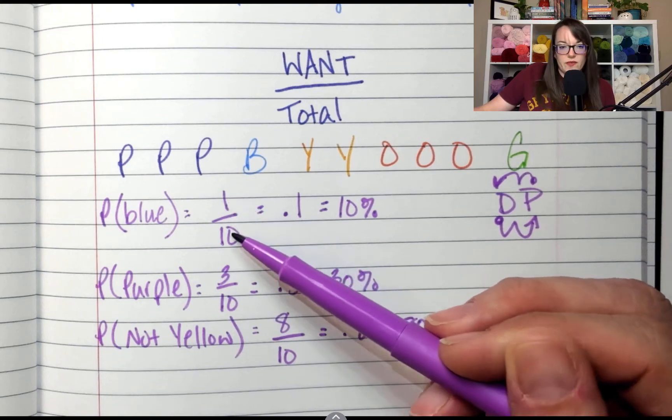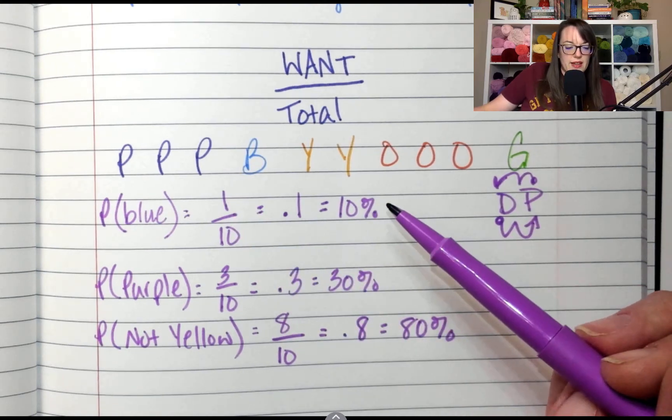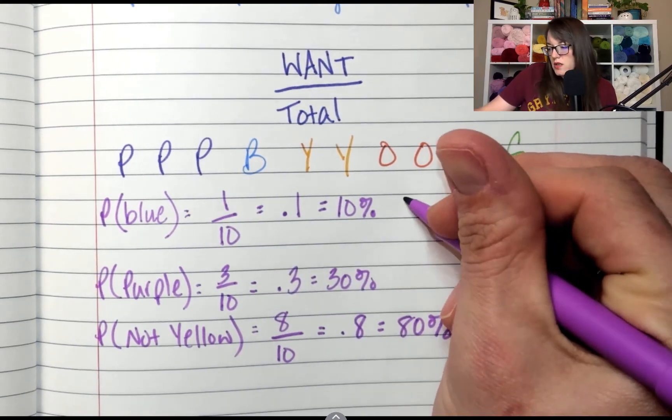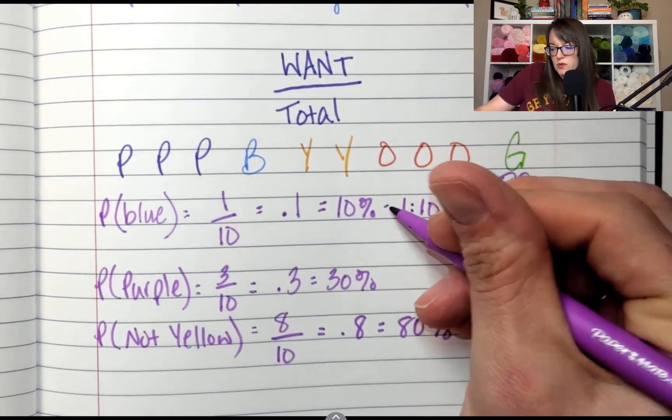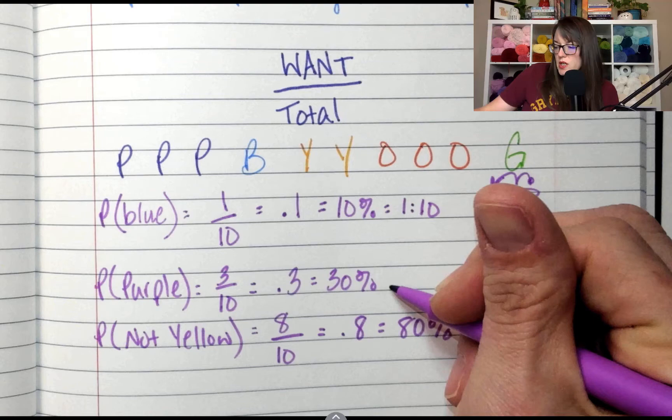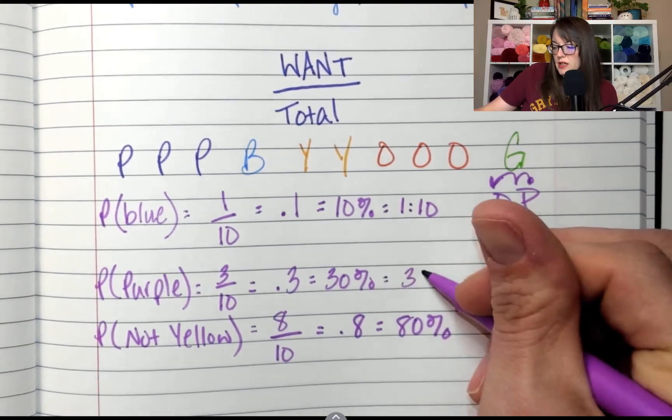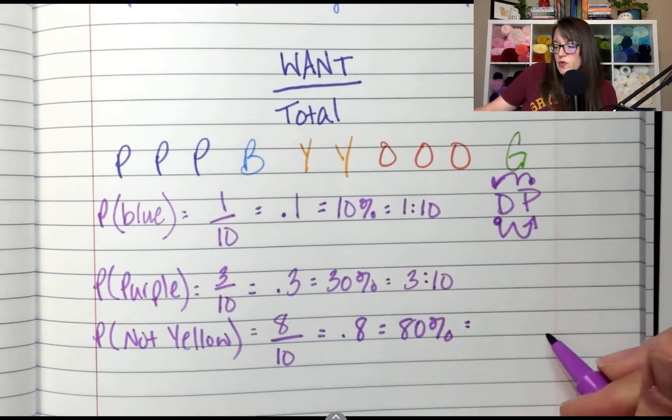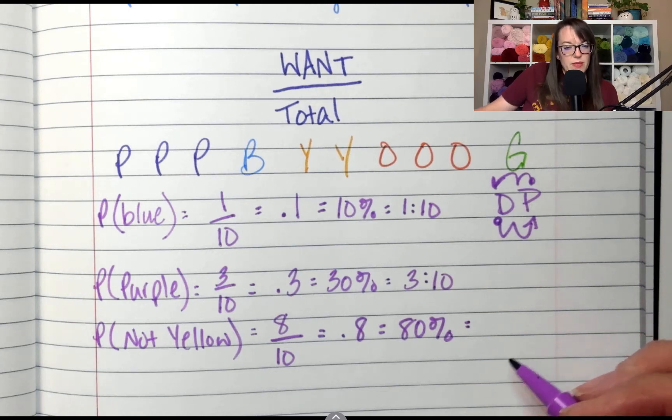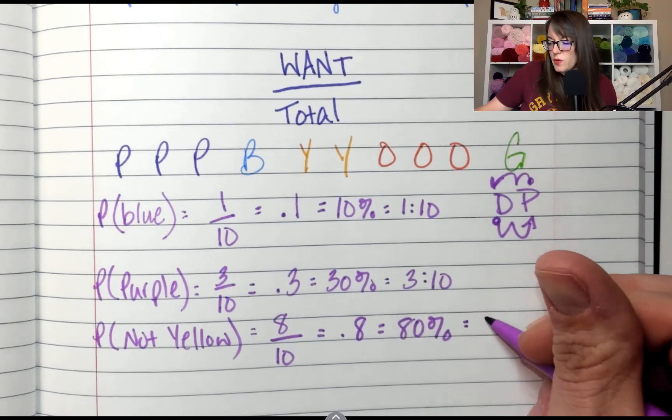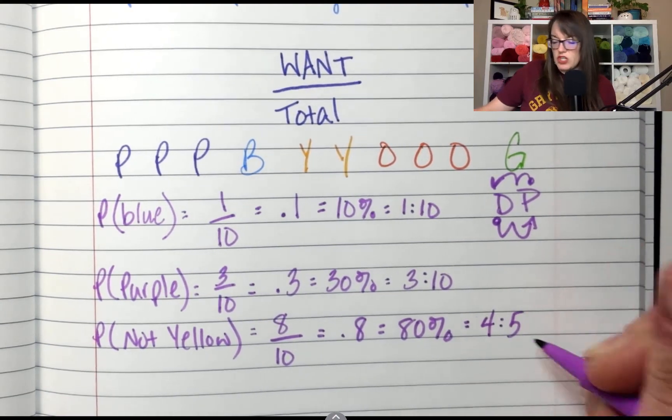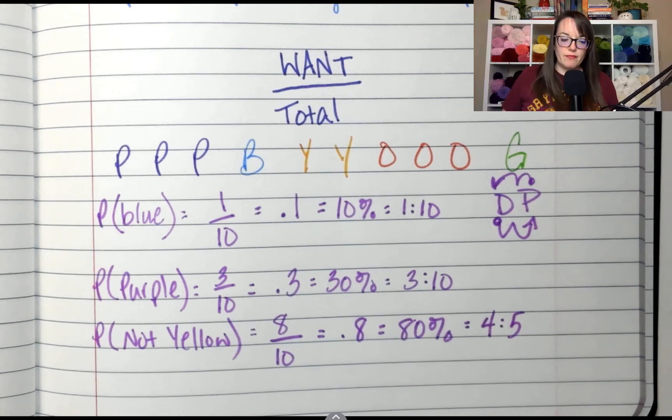Now there's another way that we can look at these. You can say one out of ten. So you would say like one colon ten. So like a ratio. We've done those before with ratios. So this one would be three colon ten. And this one would be eight out of ten. But can you reduce eight out of ten? Yeah, it would be four out of five. So we would say there's a four in five chance.